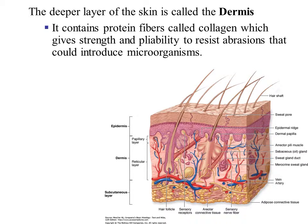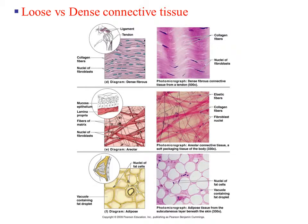The deeper portion of the skin is called the dermis, located below the epidermis. The dermis contains protein fibers called collagen, which aids in the innate immune response by giving strength and pliability to the skin, helping it resist abrasions. This prevents microbes from penetrating and getting into your body. The dermis is made up of connective tissue, comparing loose to dense connective tissue.